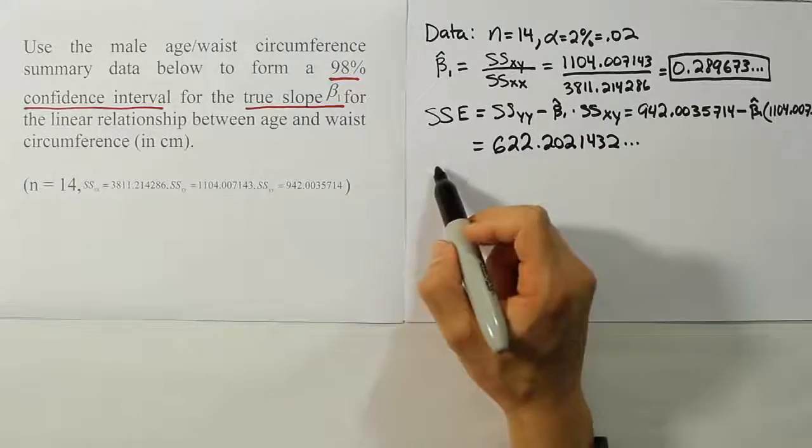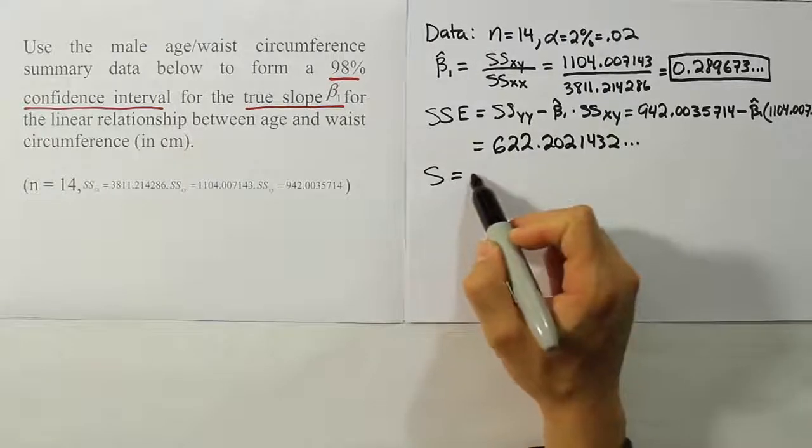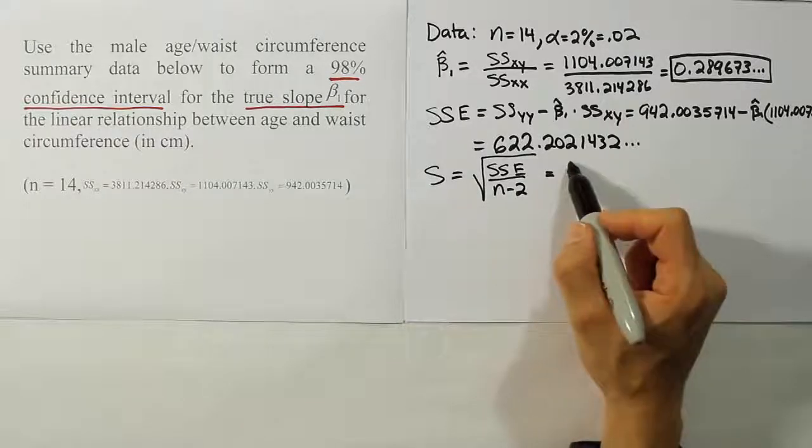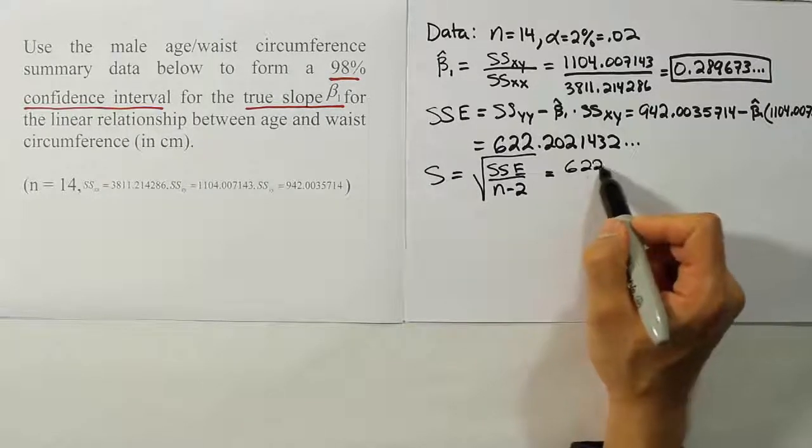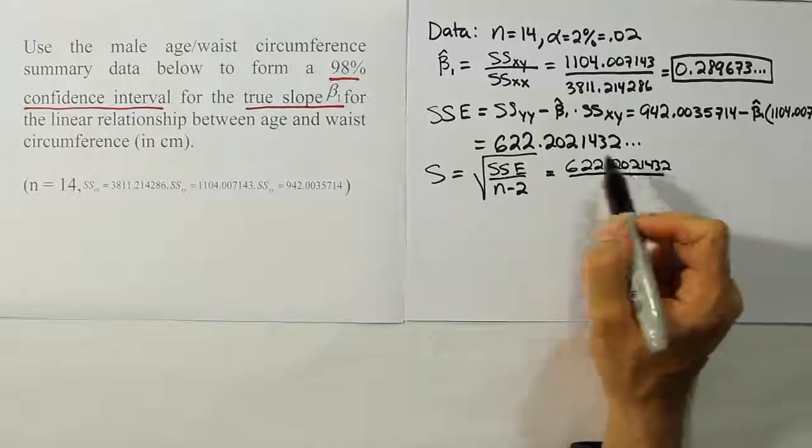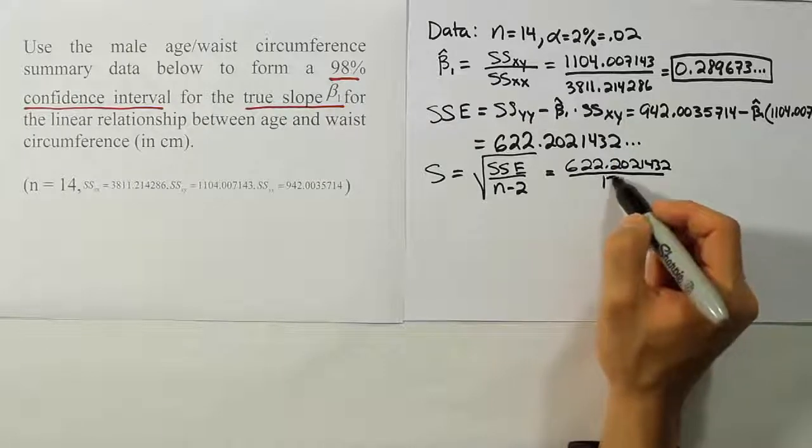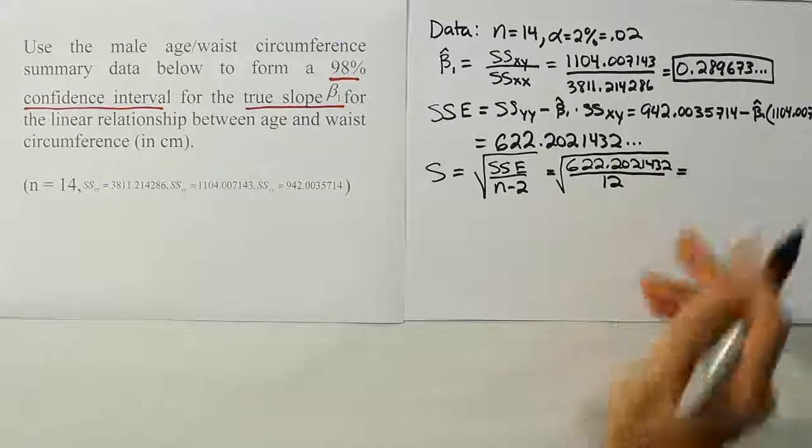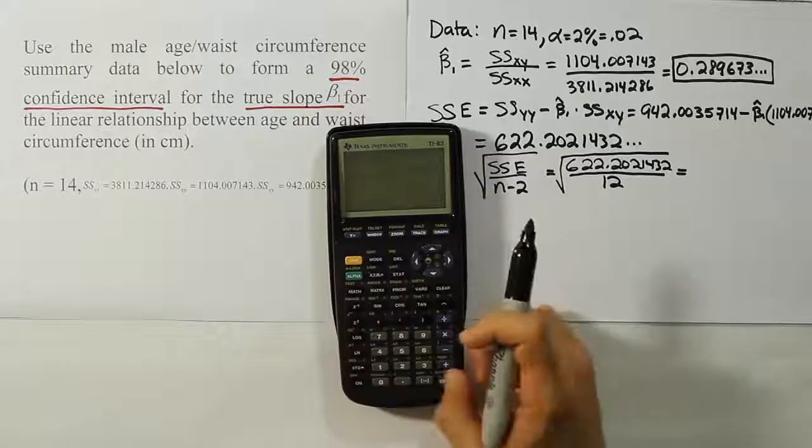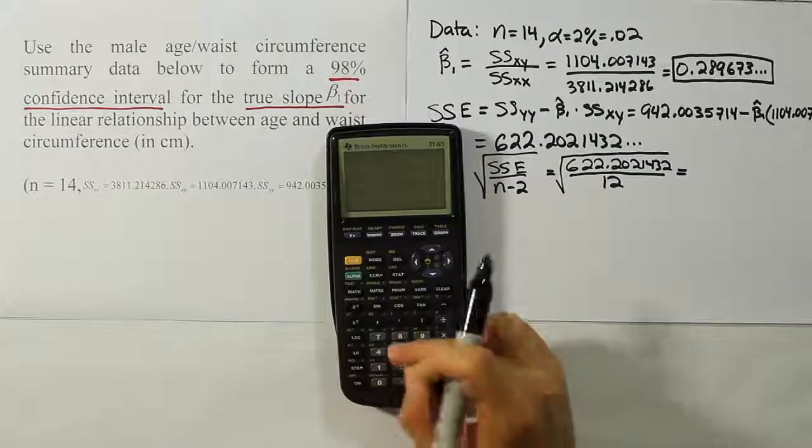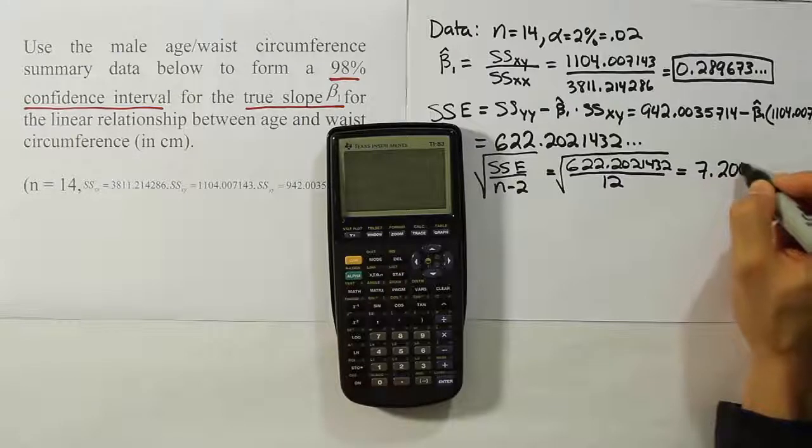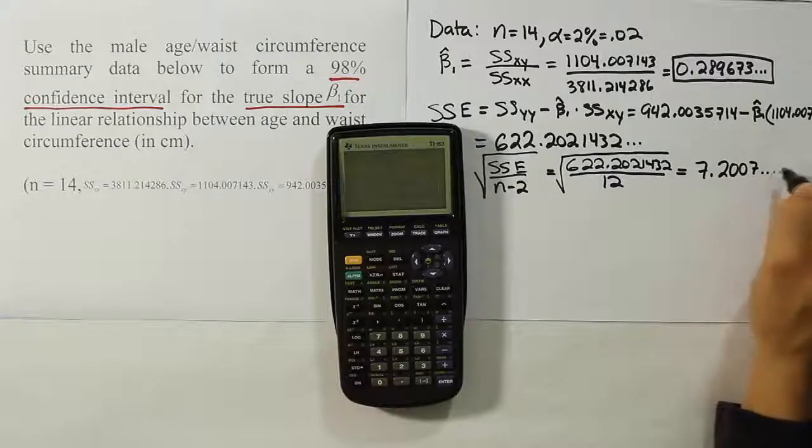From there, once we have the sum of square error, we're going to calculate our S value, which is just the square root of SSE over N minus 2. So in our case, it's going to be the square root of 622.2021432 all divided by the degrees of freedom, which is 14 minus 2, or 12. Let's see what that ends up giving us in the calculator. I'm going to hit divide by 12, and then take the square root of that, to the half power. I get the answer 7.2007.